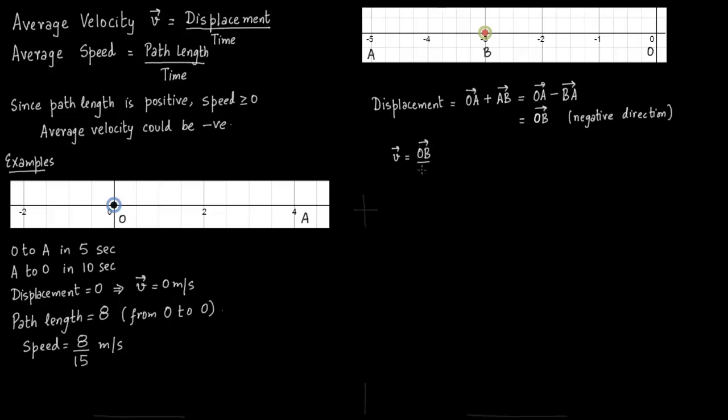So the velocity vector is OB vector divided by time taken. So let us say that time from O to A is 5 seconds and from A to B is 5 seconds. So the total time taken would be 10 seconds.